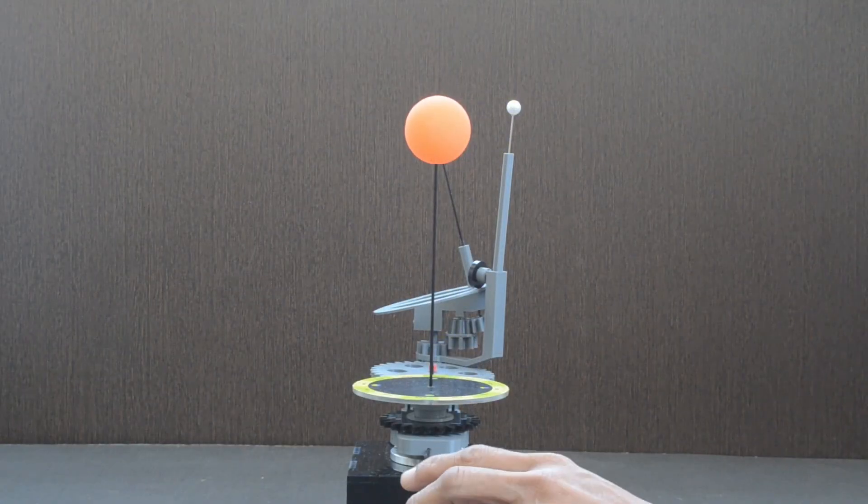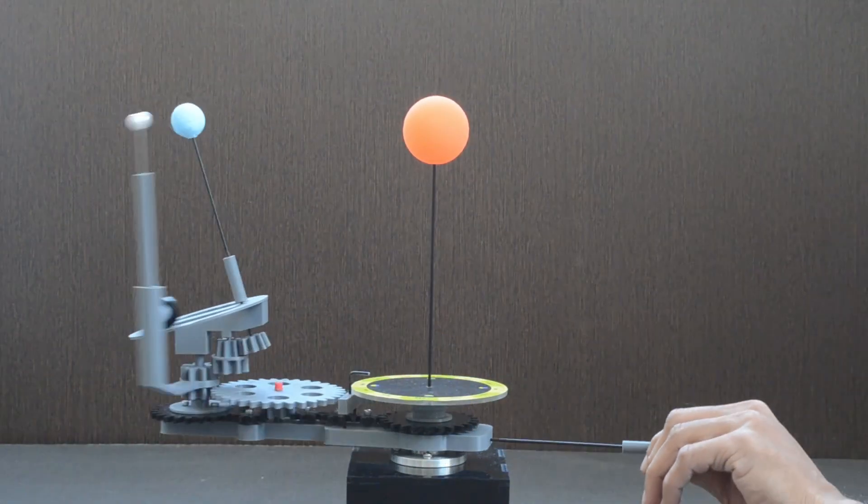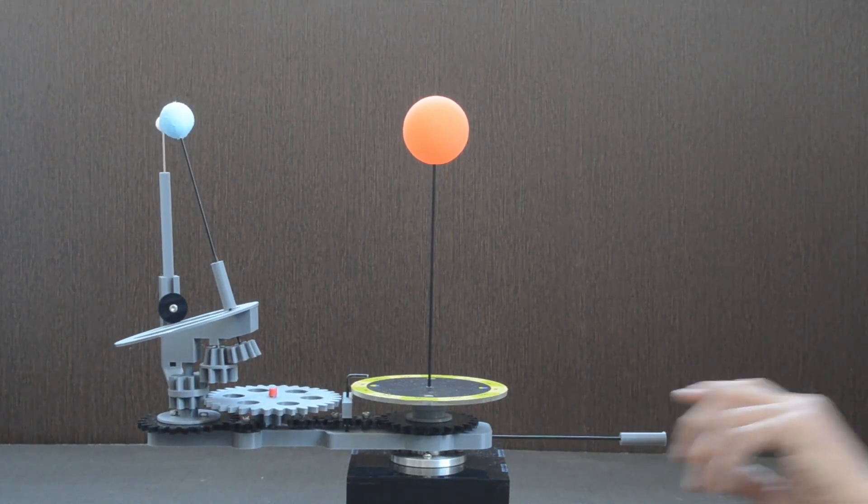Orientation of the Earth's axis with respect to the Sun changes throughout the year. This is the main reason behind seasons.